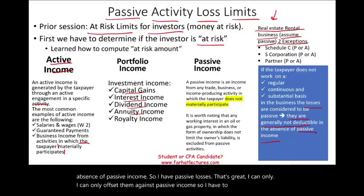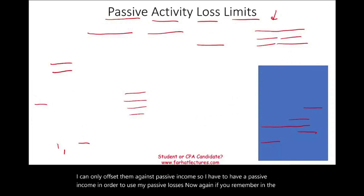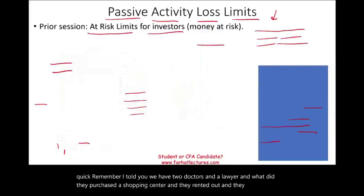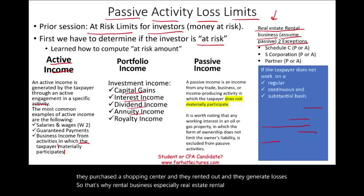From the prior session — two doctors and a lawyer purchased a shopping center, rented it out, and generated losses. That's why rental business, especially real estate rental, is always assumed to be passive, unless you have one of two exceptions we'll discuss later.